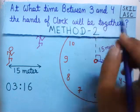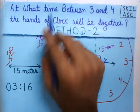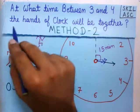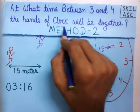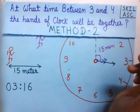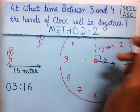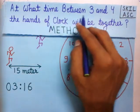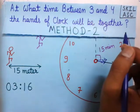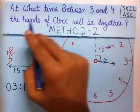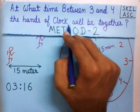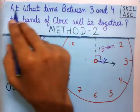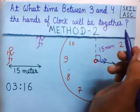The question is: at what time between 3 and 4 will the hands of the clock be together? The time must be between 3 and 4, and the next condition is that the hands of the clock must be together — and we have to find this time.